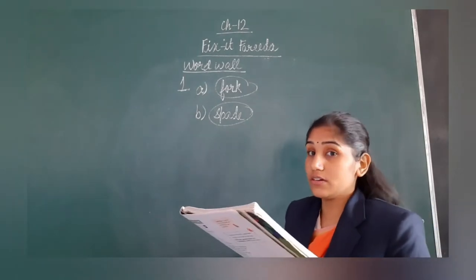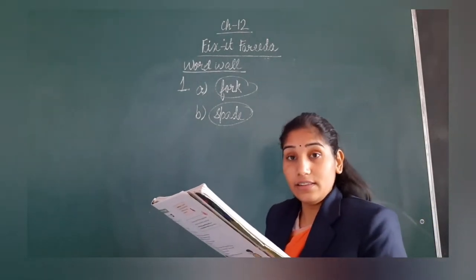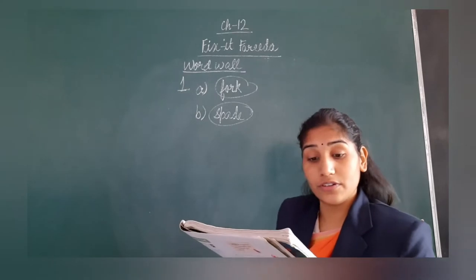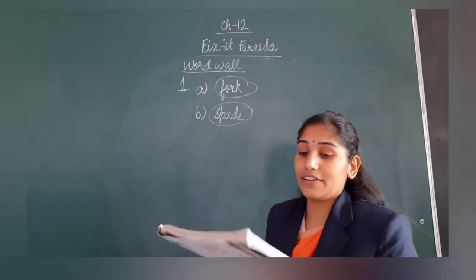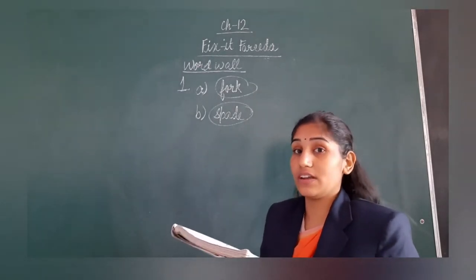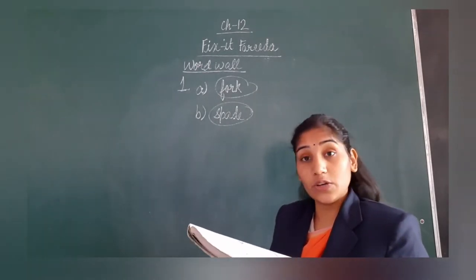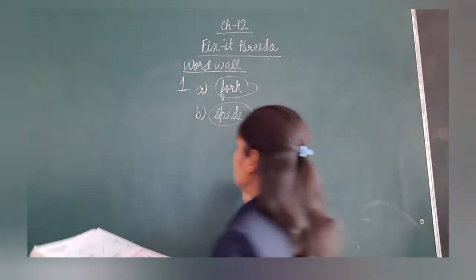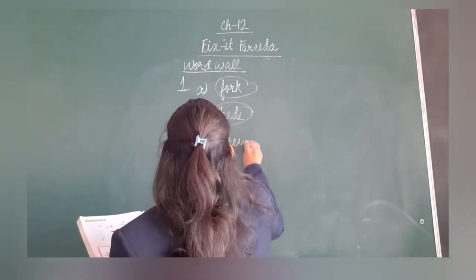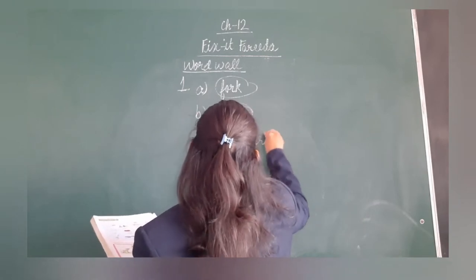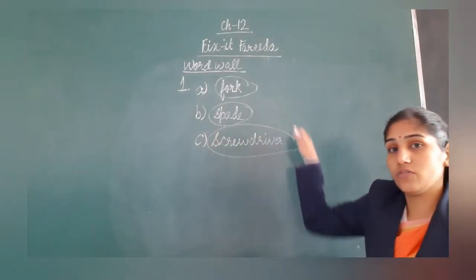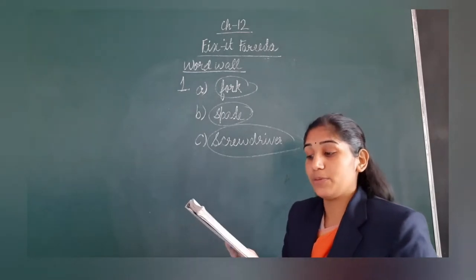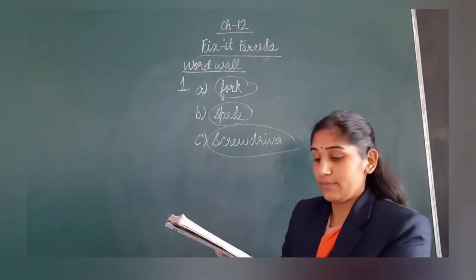Now let us move to the 3rd one. Ladle, pan, rolling pin, and screwdriver. A ladle, a pan, and a rolling pin are things that we use in our kitchen. But we don't use our screwdriver for cooking. So we will circle screwdriver. To summarise, we will circle fork in part A, spade in part B, and screwdriver in part C.